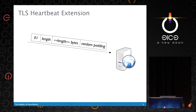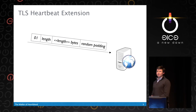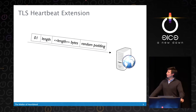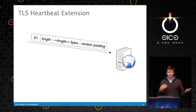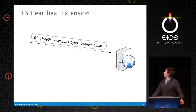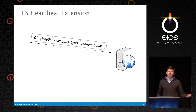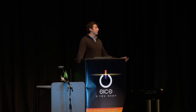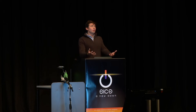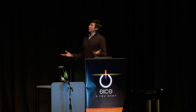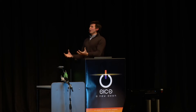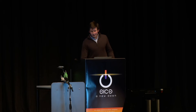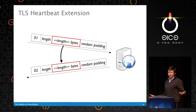The TLS heartbeat extension was released in 2012 and essentially allows either endpoint of a TLS connection to ask its partner, 'Are you still there?' The partner replies, 'Yes, I'm still around — keep the connection open.' We mostly never used the TLS heartbeat extension because we used TLS over TCP, and TCP takes care of this on a lower network layer. But TLS is also designed to work with other lower-level protocols such as UDP, where you might not have session management and just want to verify presence without renegotiating an entire session.